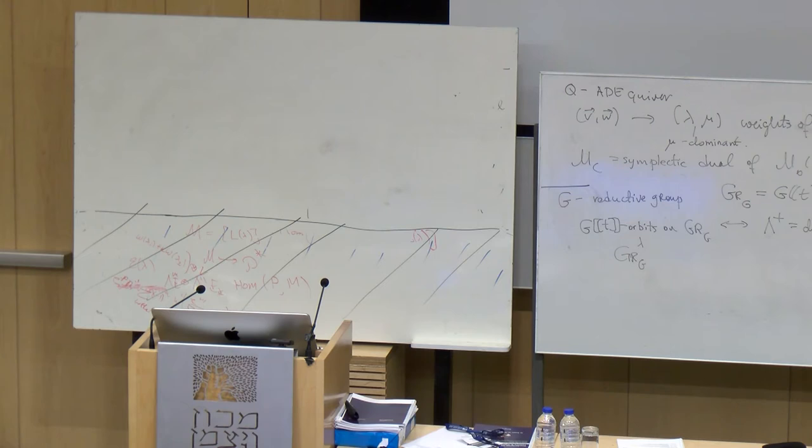In the case N=0, the answer was known for about ten years due to Bezrukavnikov and Finkelberg. In this case the algebra A — so Spec A — is what's called the universal centralizer in G-check. It is the space of pairs: x in g-check a regular element, and g in G-check such that g x g-inverse equals x, up to conjugation. This is a commutative algebra. The quantization comes from considering an additional C-star action which rotates the variable t by loop rotation — when you include everything equivariantly with respect to this C-star, this algebra becomes noncommutative, a one-parameter deformation.